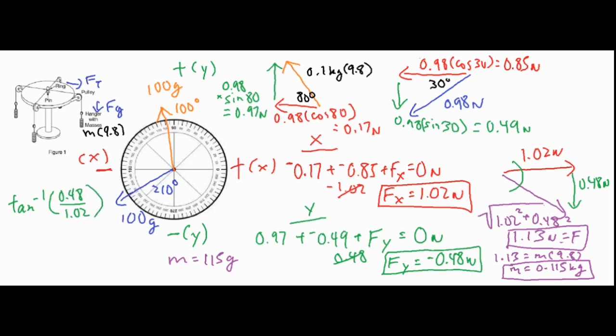That comes out to be 25.2 degrees. So we can take 360 minus 25.2, and that would give us a number of 334.8 degrees as our final angle. We're going to want to place it at 334.8 and we're going to want to hang 115 grams off the edge there, and that would complete our force table so that our ring is in equilibrium.